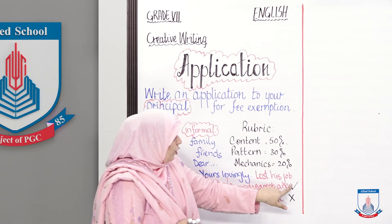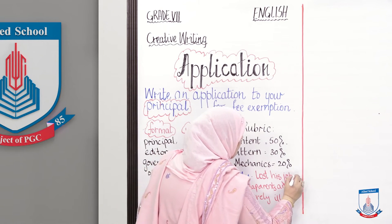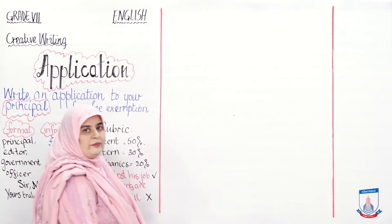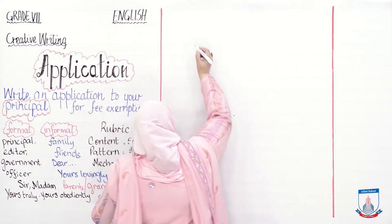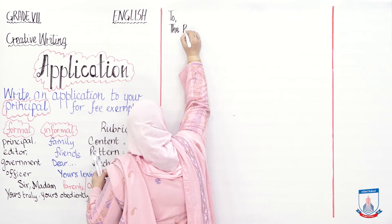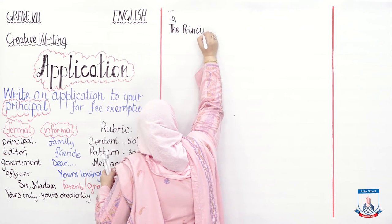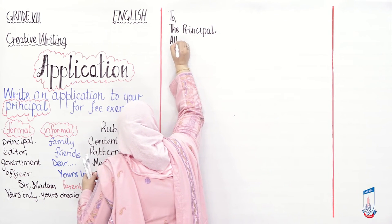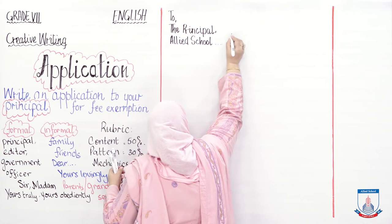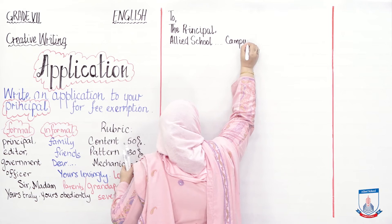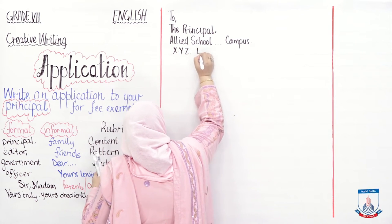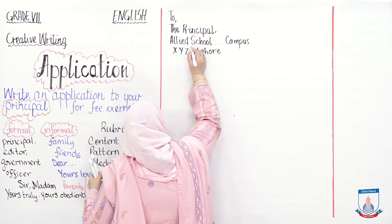So let's start the application. First, your pattern. You begin by writing: 'To the Principal, Allied School' and whatever campus you are in. The city can be any — X, Y, Z — anything you want, placed in brackets.